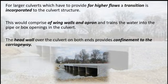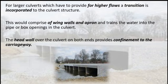For larger culverts which have to provide for higher flows, a transition is incorporated to the culvert structure. This would comprise of wing walls and apron and trains the water into the pipe or box openings in the culvert. The head wall over the culvert on both ends provides confinement to the carriageway.